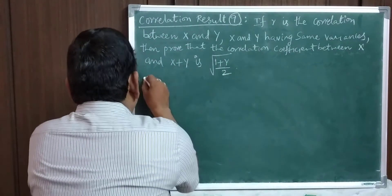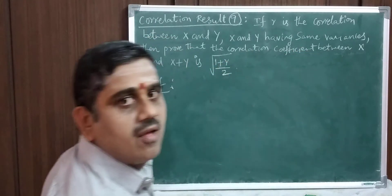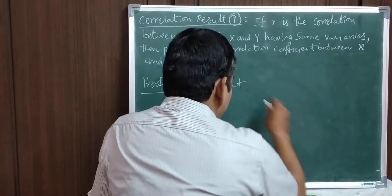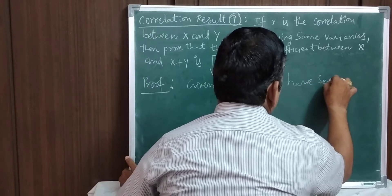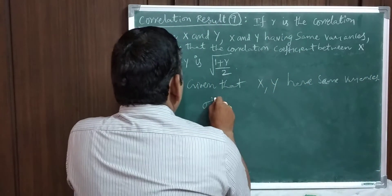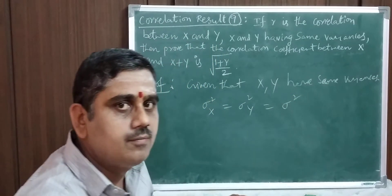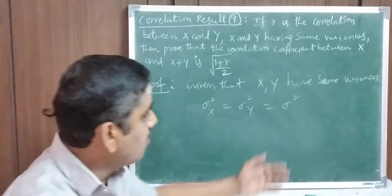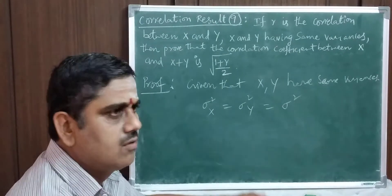To prove this result, what is given? The random variables x and y have the same variances, which means sigma squared x is equal to sigma squared y. Let it be sigma squared. Same variances means sigma squared x equals sigma squared y; I have considered it as sigma squared.